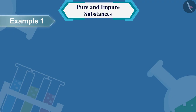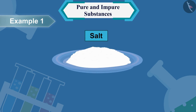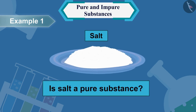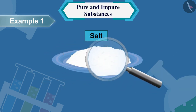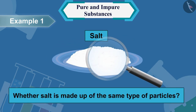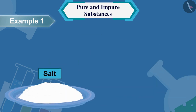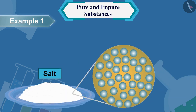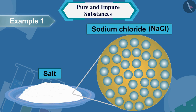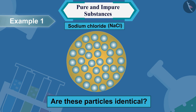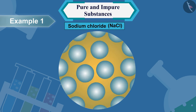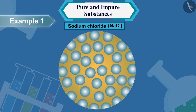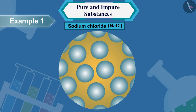Let us take an example of salt. Is salt a pure substance? For this, we will first check whether salt is made up of the same type of particles. Here you can see the particles of sodium chloride present in the salt. Are these particles identical? Yes.